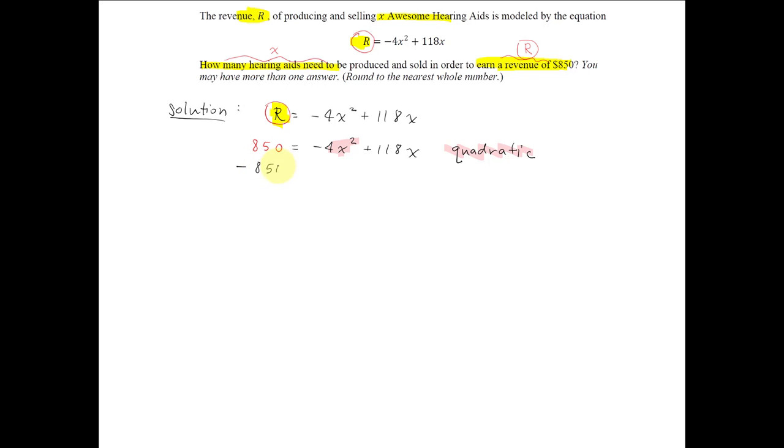So we'll subtract 850 from each side of the equation and then solve. We get zero equals negative 4x squared plus 118x minus 850.